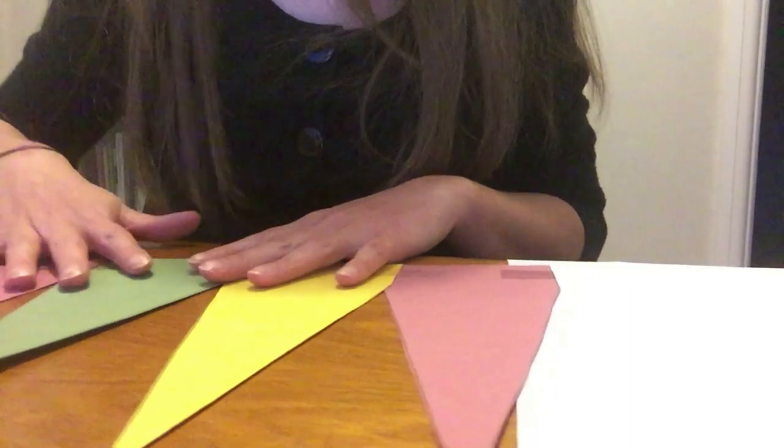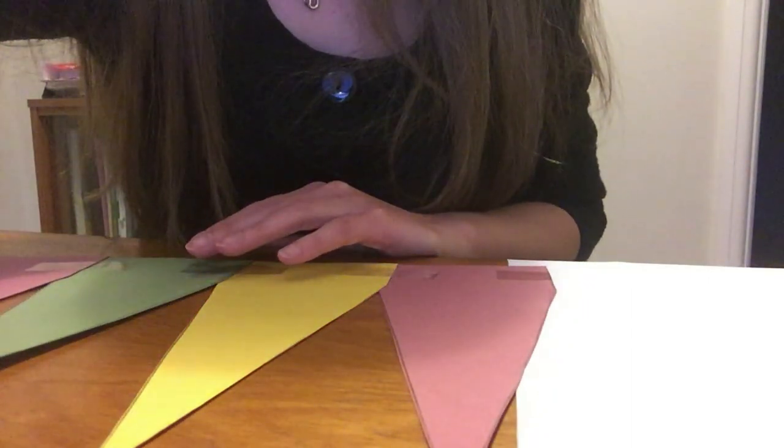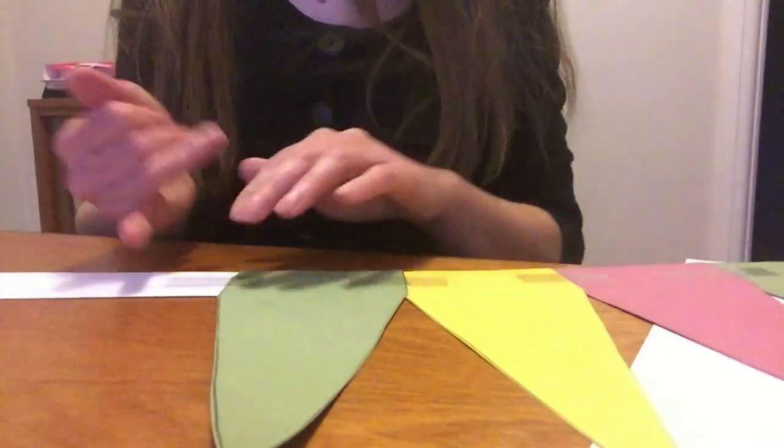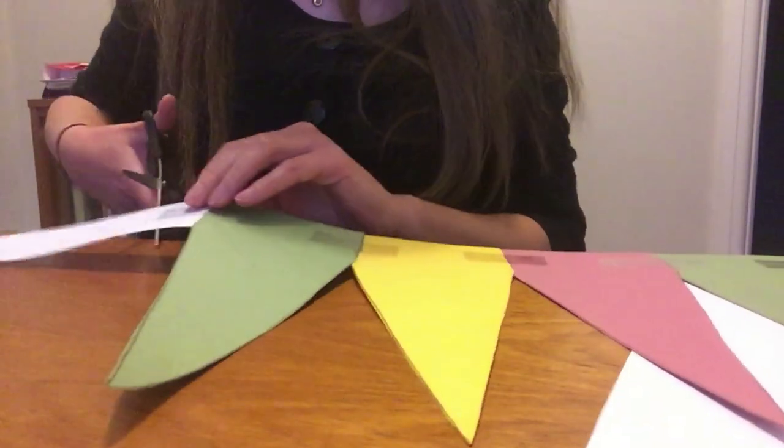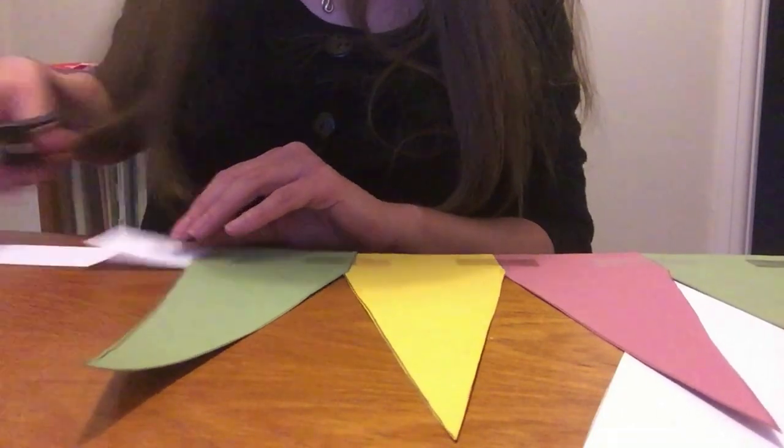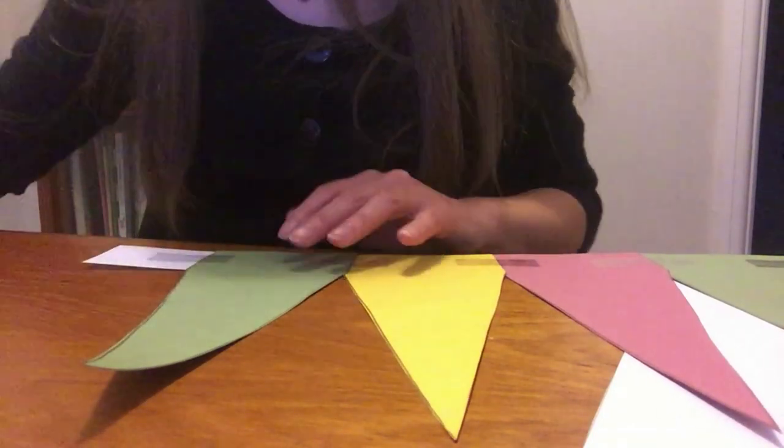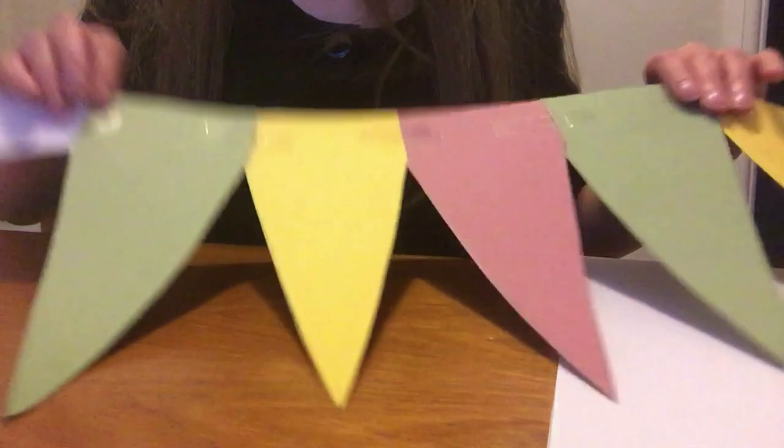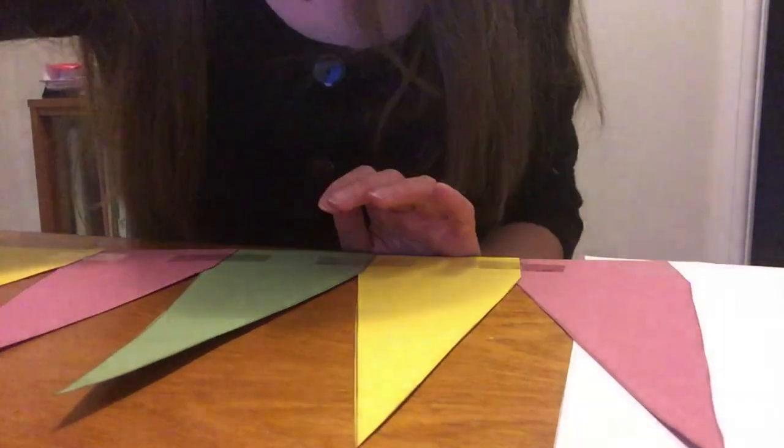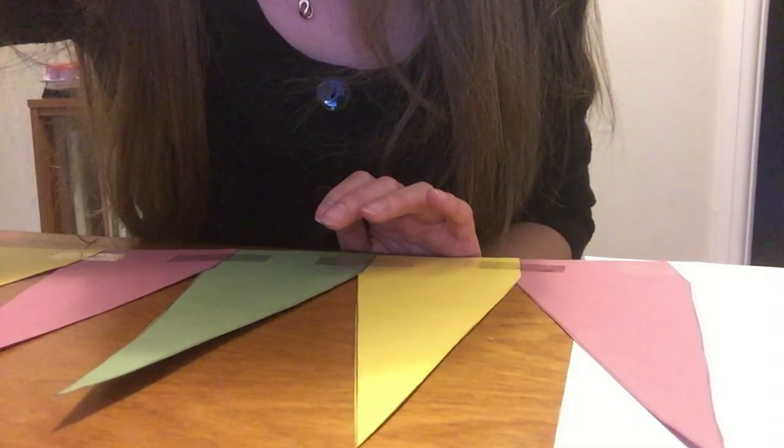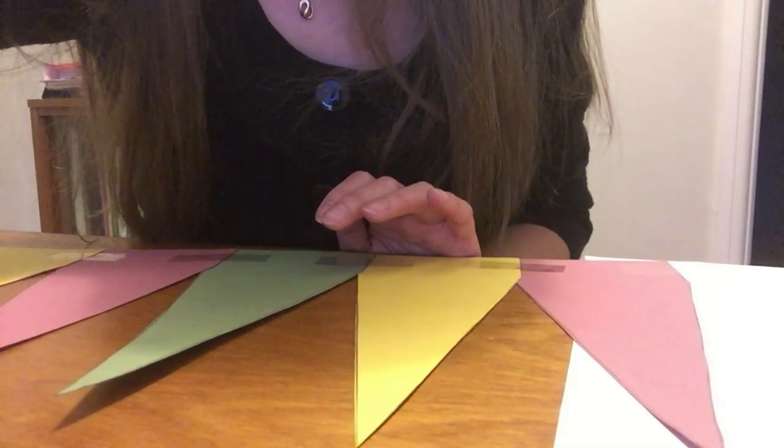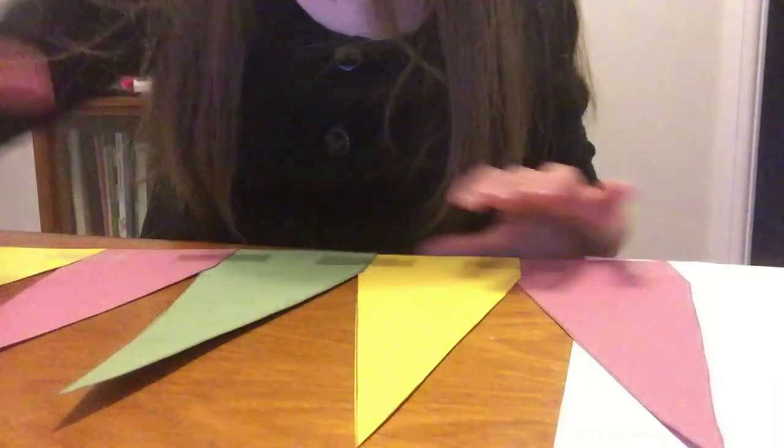And then the next thing is, I've got my band a bit long so I'm going to cut a bit off, but you want to leave a little gap so that you can stick it together at the end. I'm just going to cut that end off so it's not too long. So I've got a little bit of an end, and now the next step is to decorate the band.